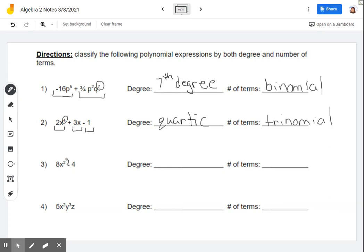Degree for the next one, the degree two. So that's a quadratic. And we're looking for a number of terms. So we have one term, two terms. So this again is going to be an example of a binomial.